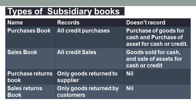Now we will see the types of subsidiary books. Subsidiary books are classified into eight types: purchase book, sales book, purchase returns book, sales returns book, cash book, bills receivable book, bills payable book, and journal proper.